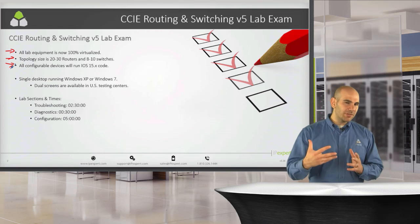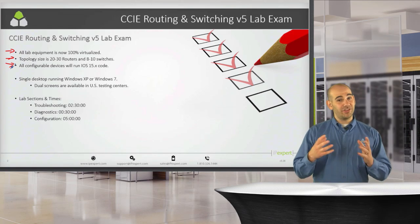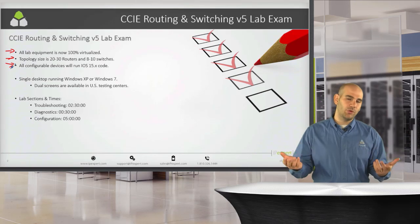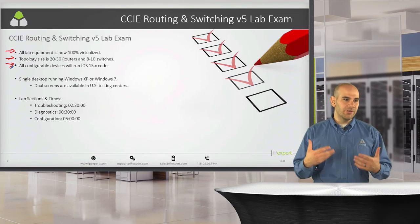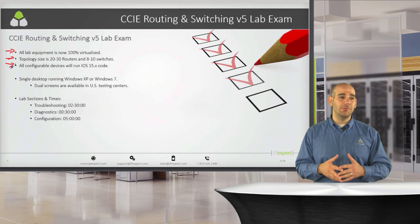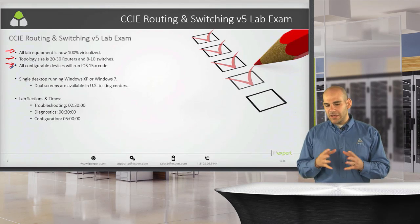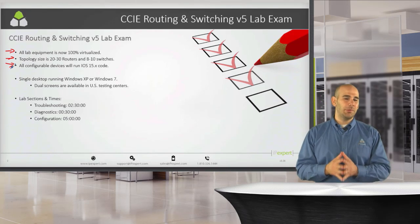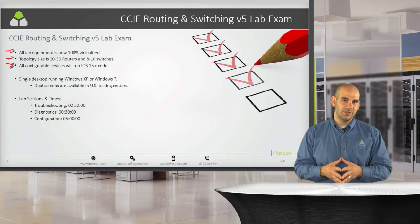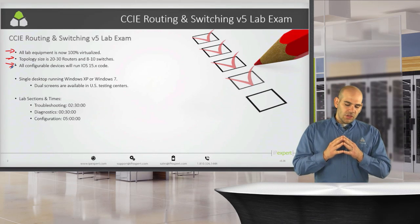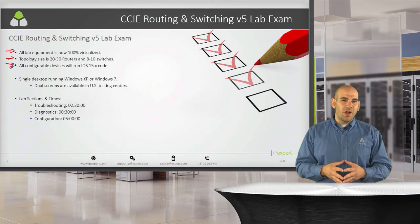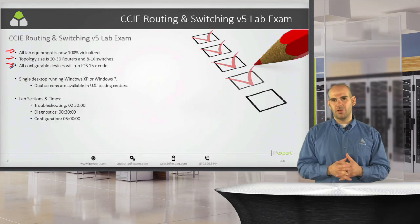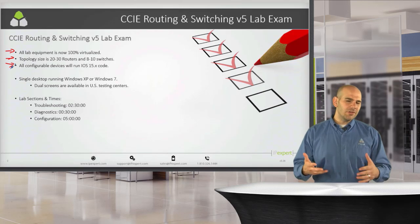This is a huge change — going from a very small, condensed physical topology to a massive virtual topology. But this is actually a great benefit. In v4, folks would say they failed because the proctor unplugged a cable, which wasn't true. The proctors are there to make sure you don't cheat and that you do a good job — they're not there to make you fail. There are no more real physical problems; yeah, a link or server could go down, but Cisco has built in redundancies to accommodate for that.